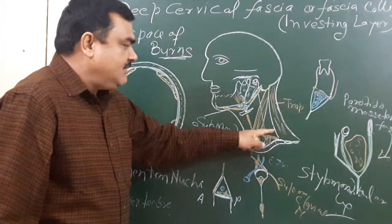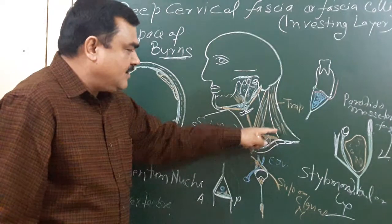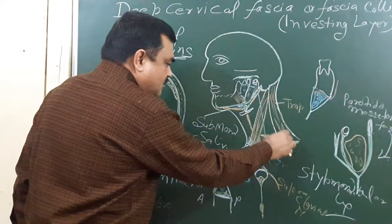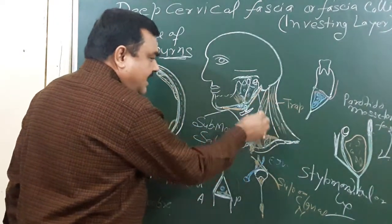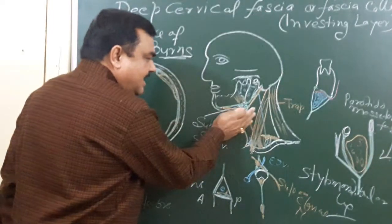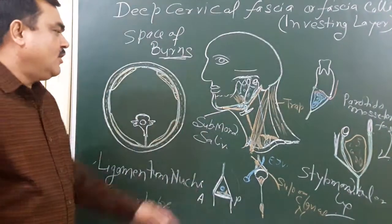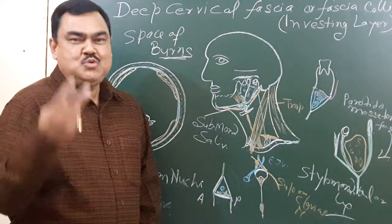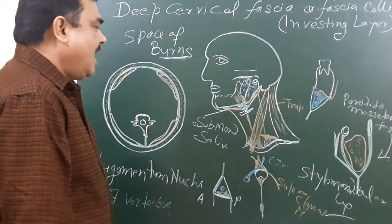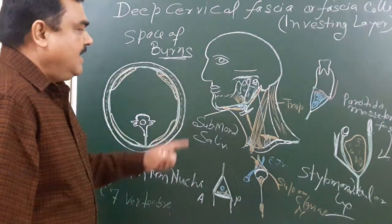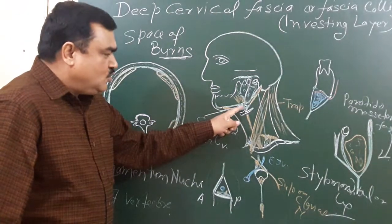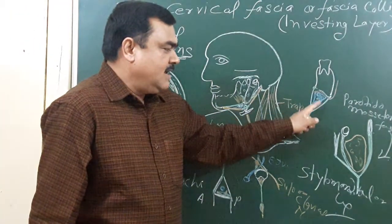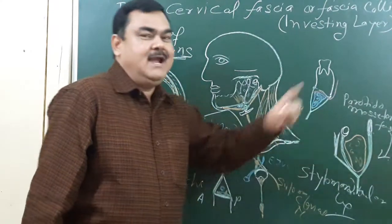It forms the roof of two triangles: the posterior triangle of the neck and the anterior triangle of the neck. So it forms the roof of both the anterior and posterior triangles. It also encloses two glands — one is the submandibular gland and the other is the parotid gland.